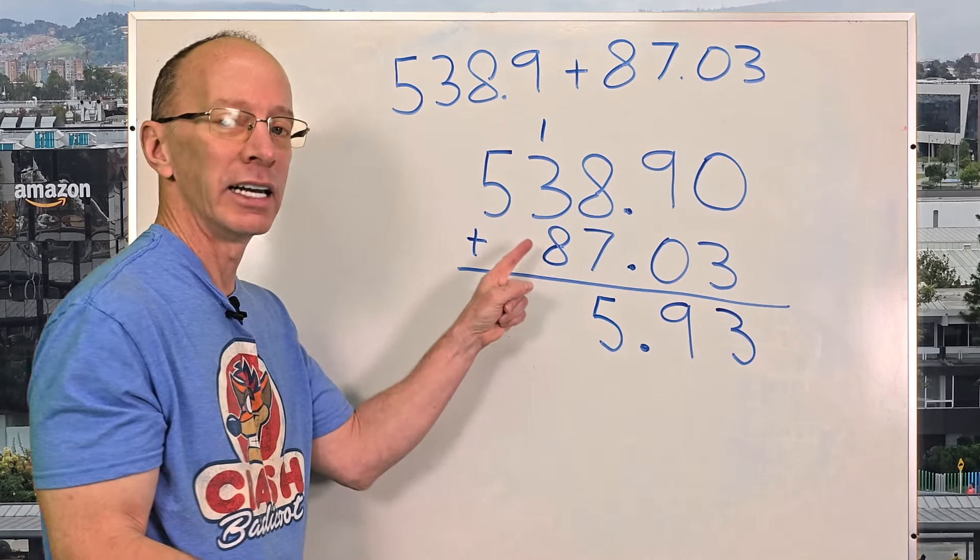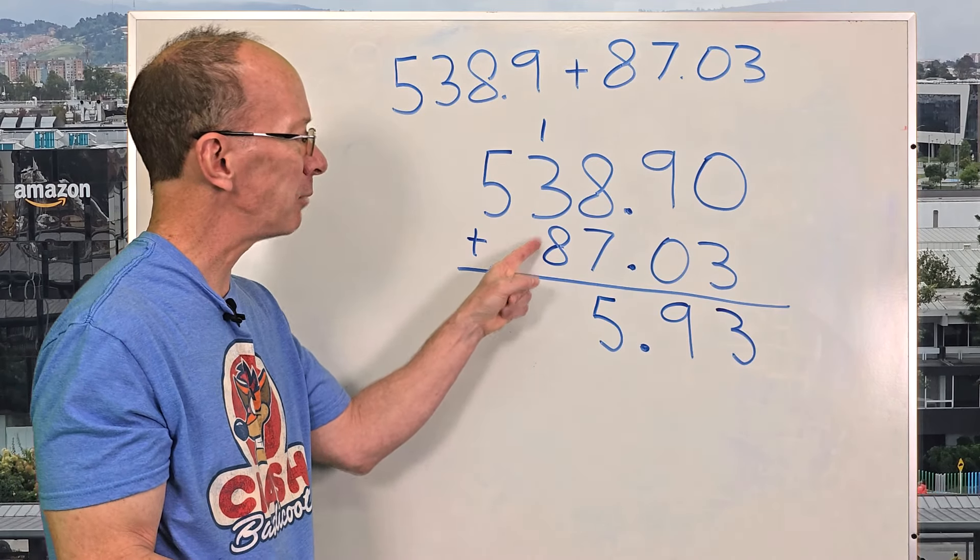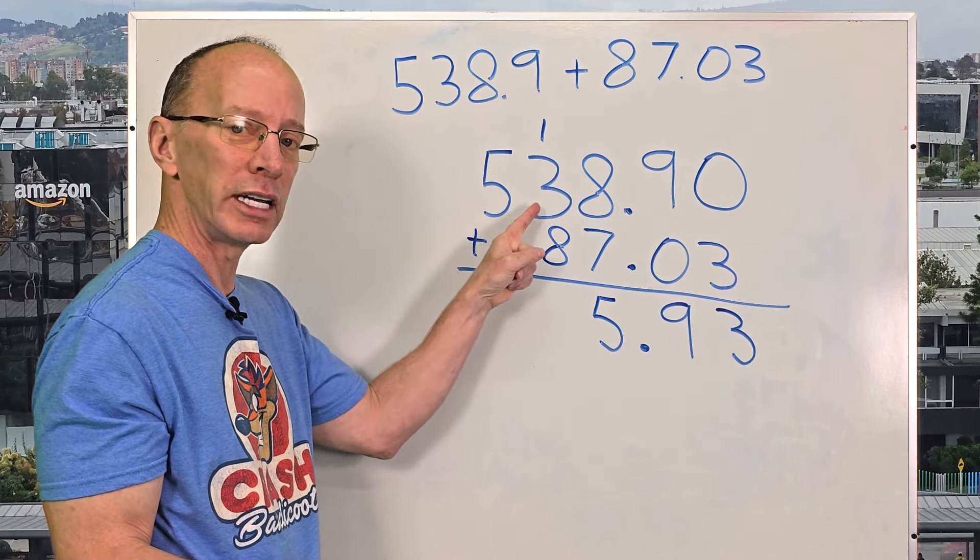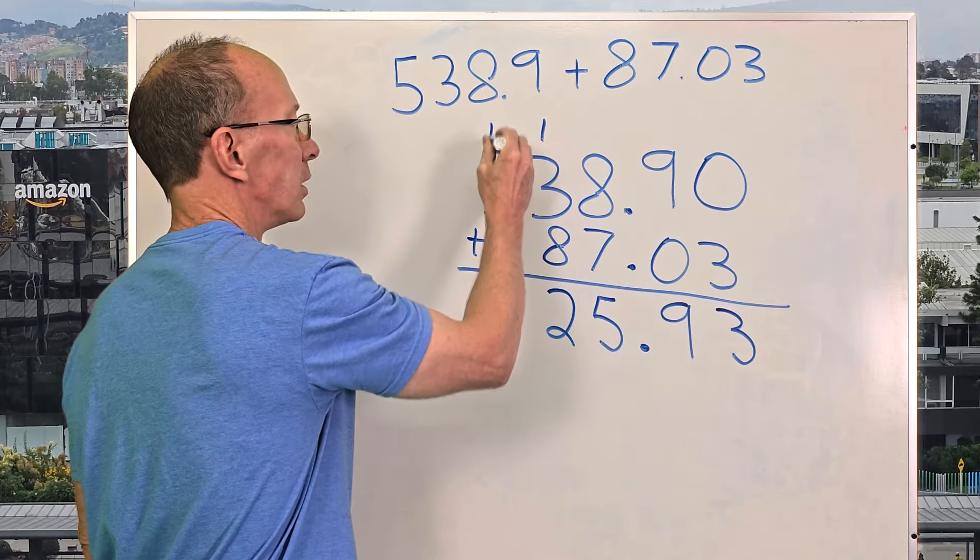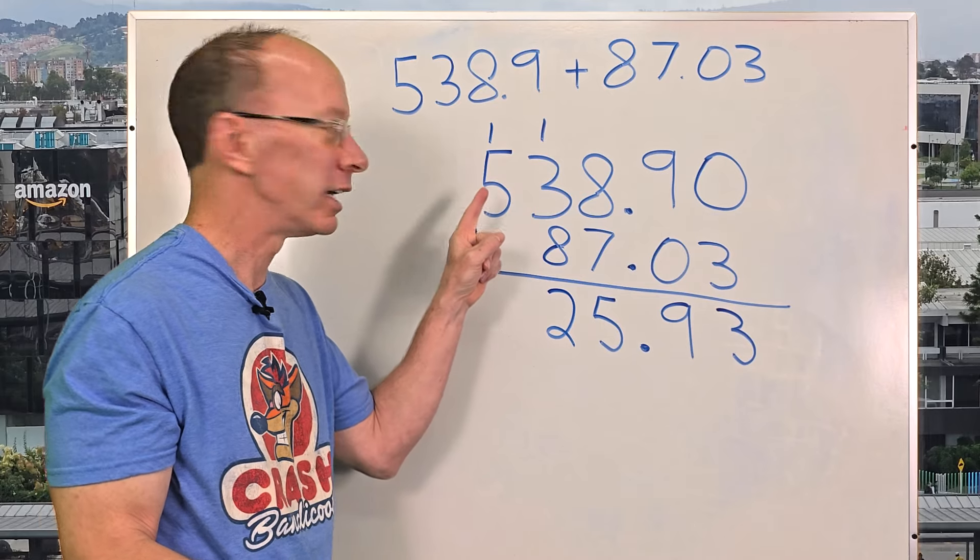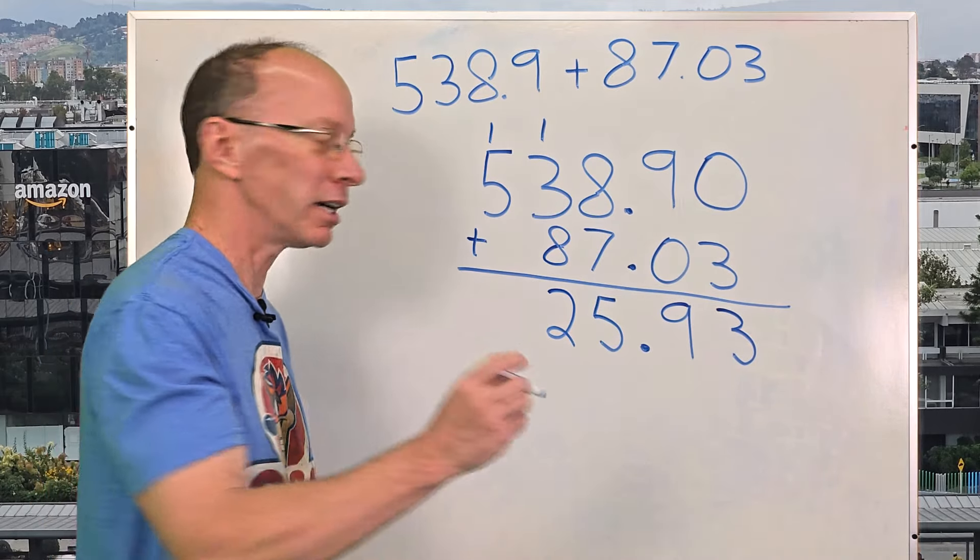And now I can add these numbers. I'm going to take eight plus one equals nine. And then nine plus three equals 12. So I put the two right here, carry the one. And now I'm going to add five plus one equals six.